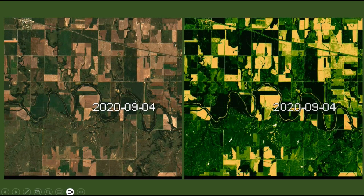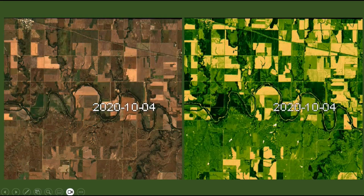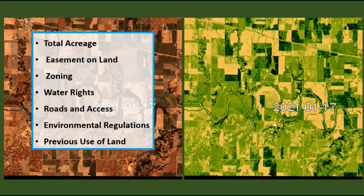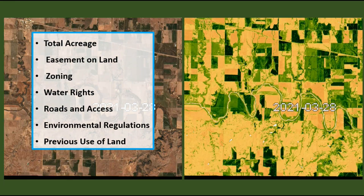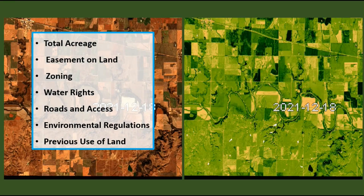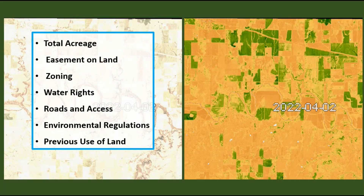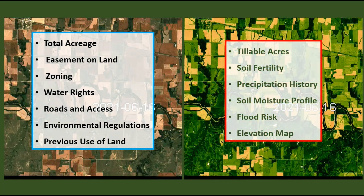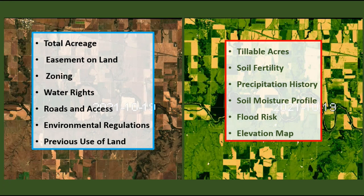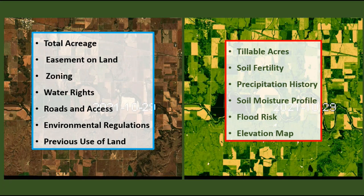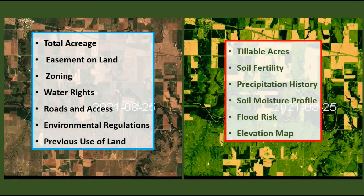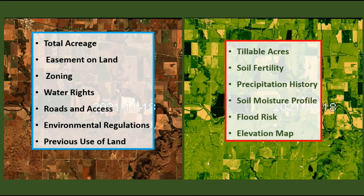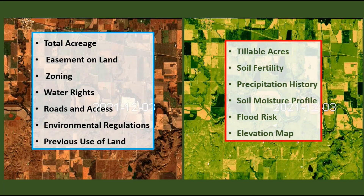In case you are about to purchase or lease a parcel of land to farm, there is a checklist of what to consider before finalizing a deal. Potential yield and agronomic factors are crucially important for farmers, but many people don't have access to those attributes of farms. In this video, we show how satellites can reveal what you must know about your future farm.